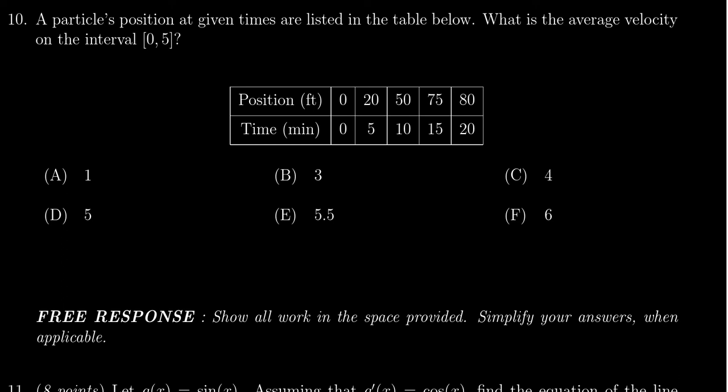We're looking for delta s over delta t as t ranges from zero to five. This is going to look like s of five minus s of zero over five minus zero. The evaluation of function will come from the table right here.